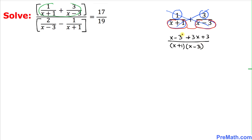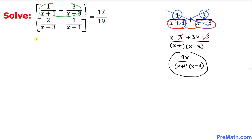So that's our top part. Negative 3 and positive 3 cancel out. So on the numerator we're going to have x plus 3x, which makes 4x, divided by x plus 1 times x minus 3. The top part of this left-hand side can be replaced by 4x, so I'm going to write down 4x divided by x plus 1 times x minus 3.